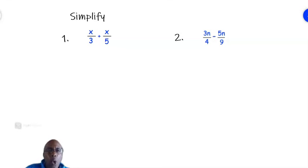Simplify x over 3 plus x over 5. So we are adding two fractions. The denominators are numbers but in the numerators we have algebraic expressions, just x. We do the same thing we did to add normal fractions.